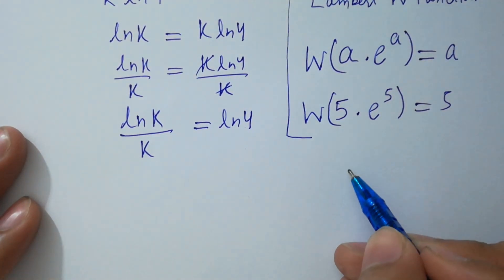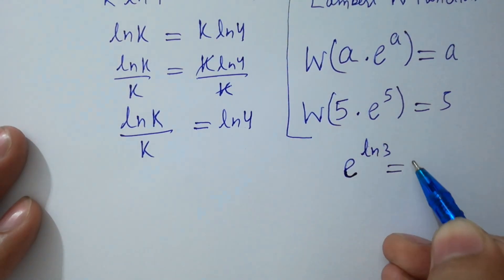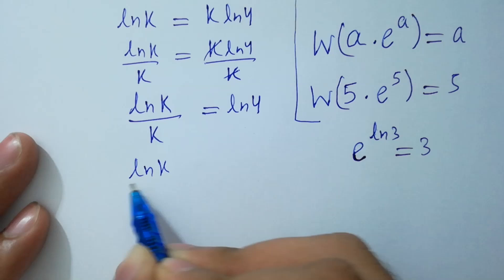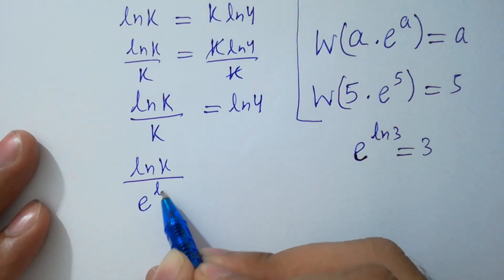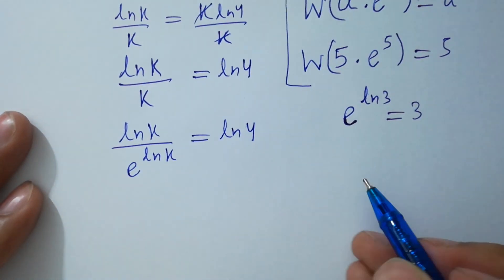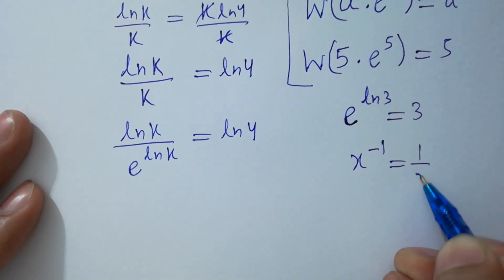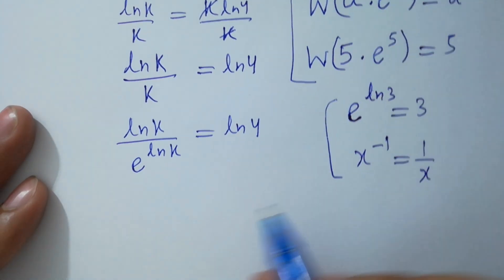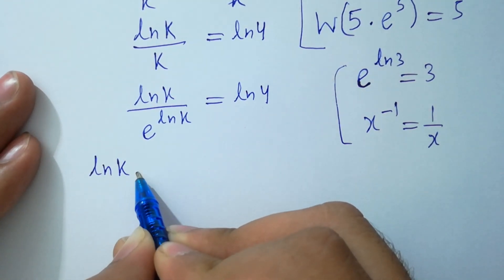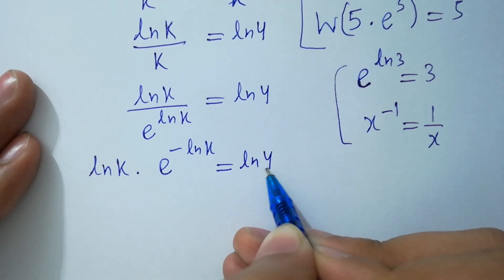Since e to the power ln 3 equals 3, here k equals e to the power ln k. So ln k over k becomes ln k times e to the power minus ln k equals ln 4, since x to the power minus 1 equals 1 over x.